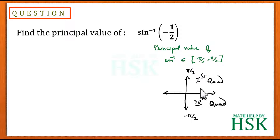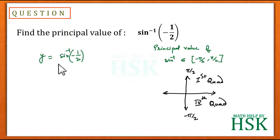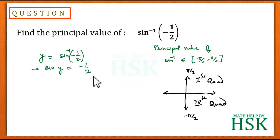That is why we get the interval minus pi by 2 to pi by 2 when we take the fourth and first quadrant. Now we assume that the principal value y equals sine inverse of minus 1 by 2. Whenever we calculate the principal value, we set it equal to a variable y, and since y equals sine inverse of something, sine of y equals that value. So we get sine y equals minus 1 by 2.